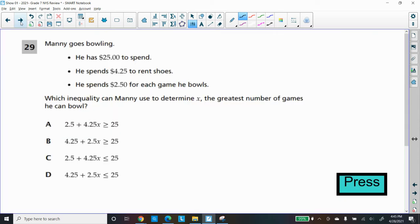Here's another question. Number 29 from the State Test 2019. Manny goes bowling. He has to spend $25. That's good to know. He spends $4.25 to rent shoes. He spends $2.50 on each game he bowls. This sounds a little like the other question, each game. So $2.50 times the number of games. You can call it X or G for games. So that'll be $2.50X.